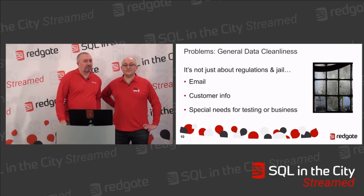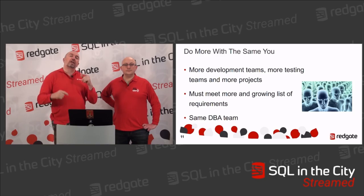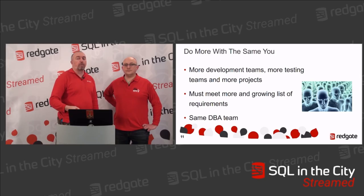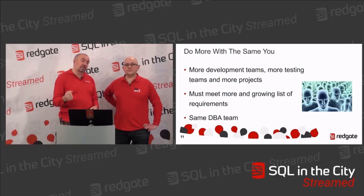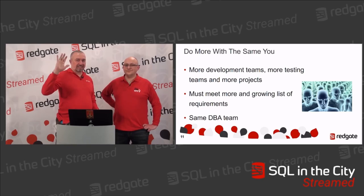All of this adds up to problems with data in development, and problems making it so we can provision everything you need. It gets worse: as we move into a DevOps model, Dev is moving more towards Ops, Ops is having to move more towards Dev. You're going to have more teams, more testing, more processes, more provisioning — all of it with the same DBA team of one, two, or three people. And now you've got more stuff to deliver, faster. Because running that one terabyte restore 15 times is not going to be quick.